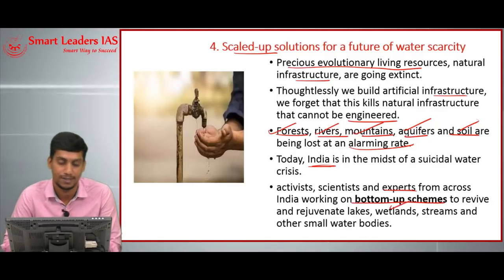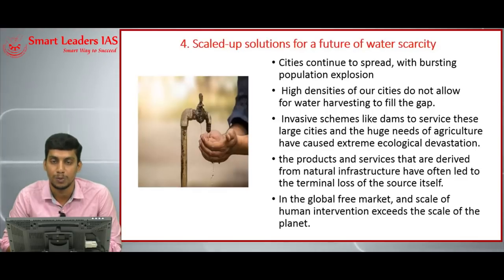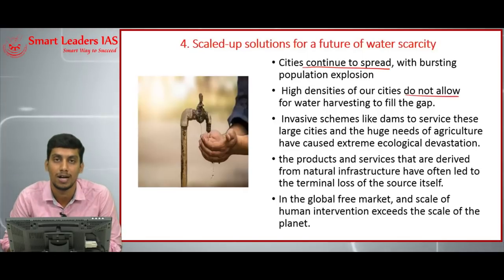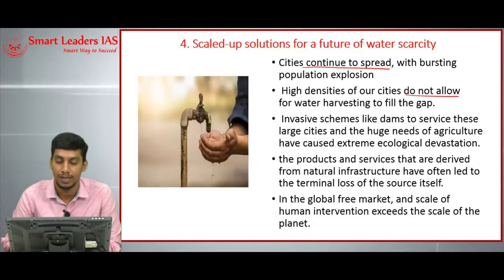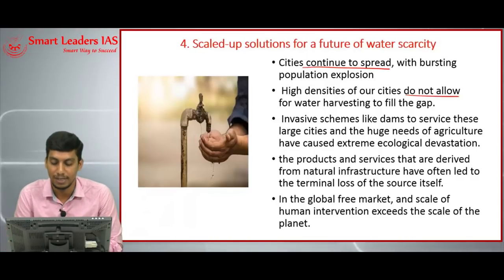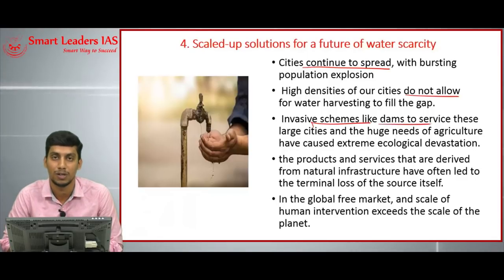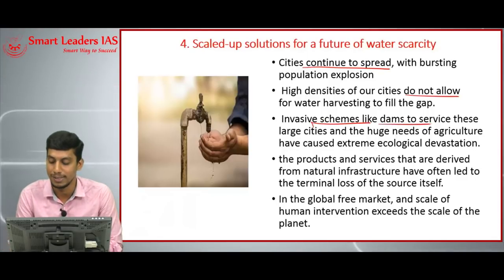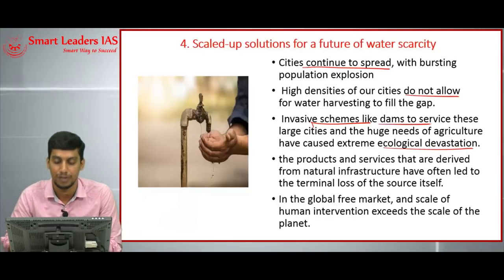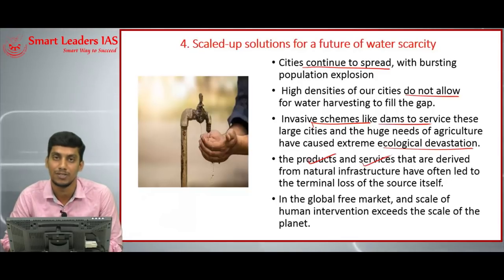Since population is growing exponentially, our cities continue to spread, and the high densities of cities do not allow for water harvesting. On one side, large cities are growing; on the other side, agriculture needs more water. To meet these demands, invasive schemes like dams are being built — that is not a problem in itself — but ultimately this ends up in ecological devastation.